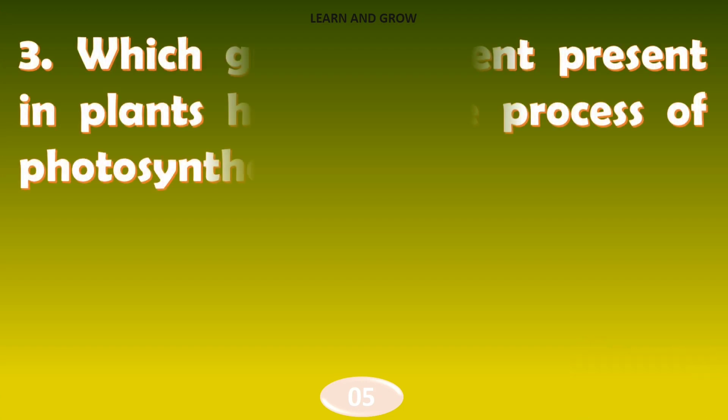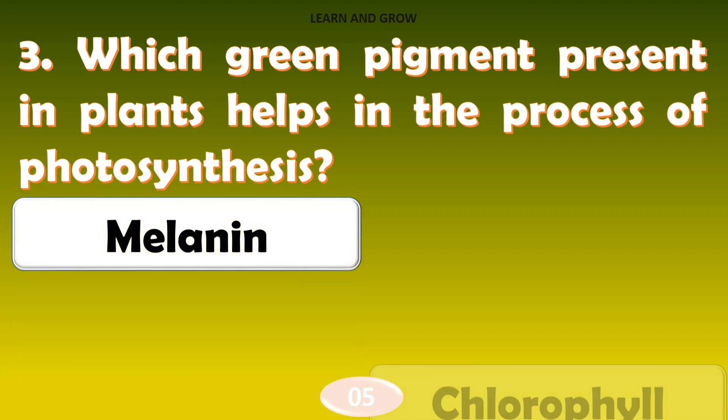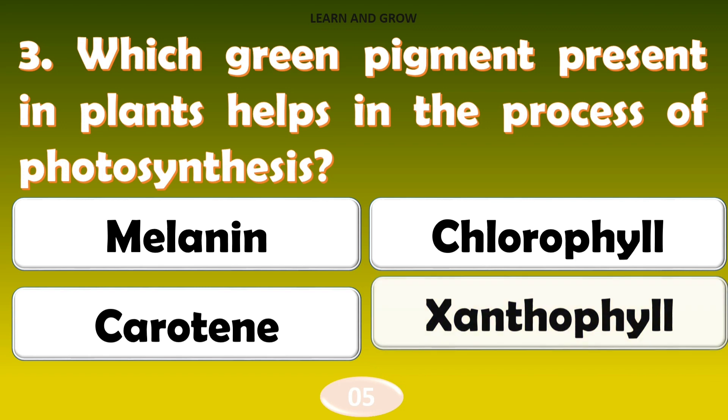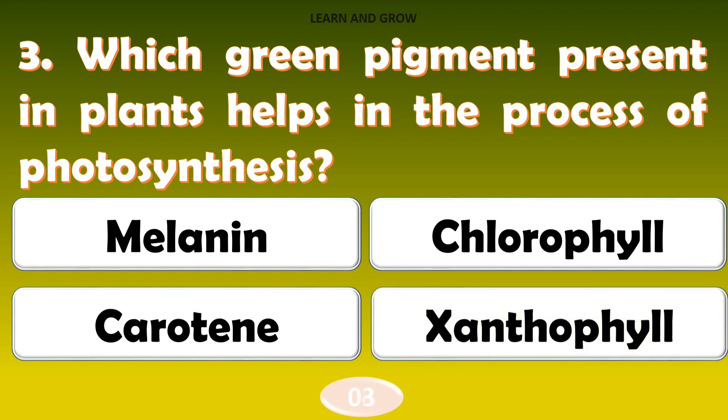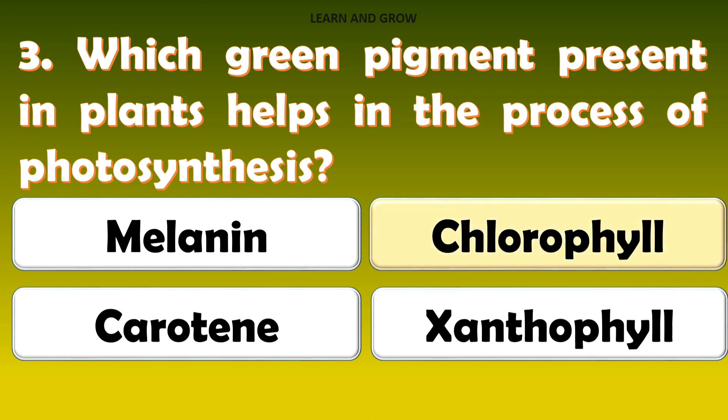Which green pigment present in plants helps in the process of photosynthesis? The right answer is option B. Chlorophyll.